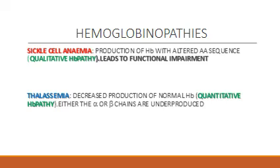Thalassemia, on the other hand, is due to decreased production of normal hemoglobin. There is a decrease in the production of either the alpha chain or the beta chain, and this is known as quantitative hemoglobinopathy — either the alpha chains or beta chains are underproduced.